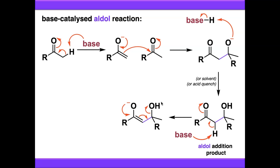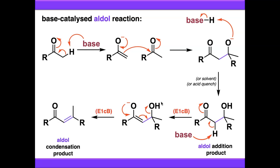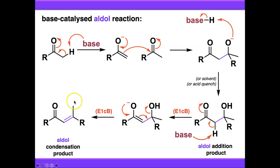This is the exception to the rule, because this is an E1CB elimination, and because this intermediate is reasonably stable it will basically stick around until hydroxide leaves. If you want a reminder of the E1CB reaction, watch the video on elimination from saturated carbon. This elimination reaction gets rid of water across this bond here. This is what we call the aldol condensation product, where you've got a carbon-carbon double bond rather than the alcohol.